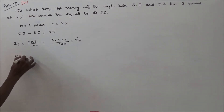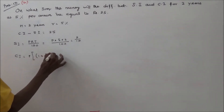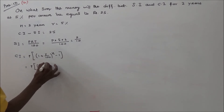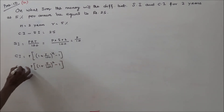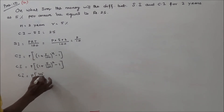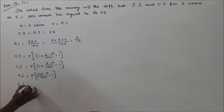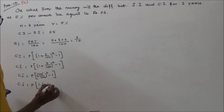Now we calculate the compound interest. Compound interest equals P into (1 + R/100) to the power n minus 1. Substituting values, this is P into (1 + 5/100) squared minus 1. Simplifying, (1.05) squared equals 1.1025, so we get 1.1025 minus 1.